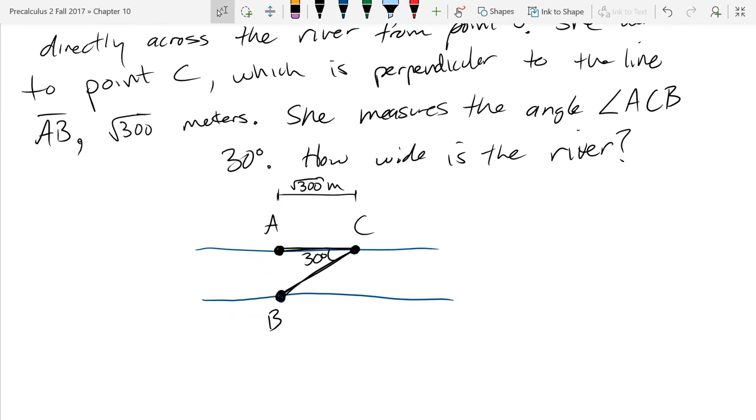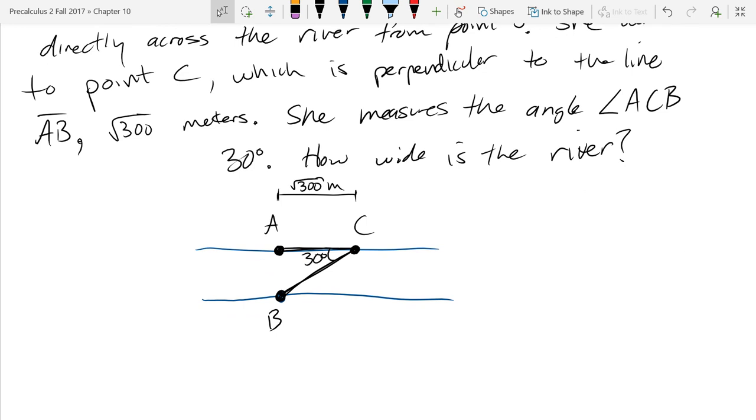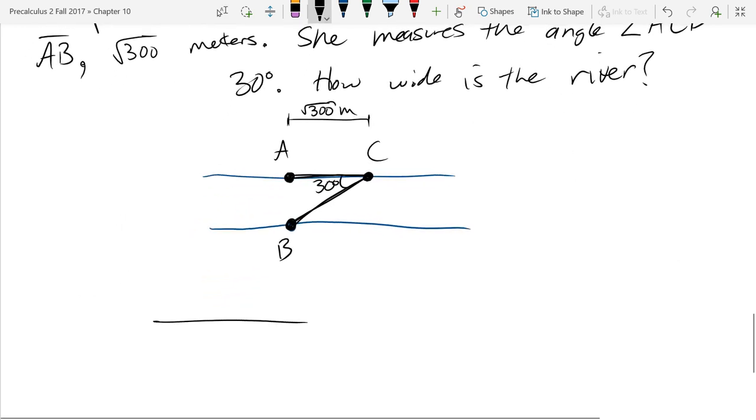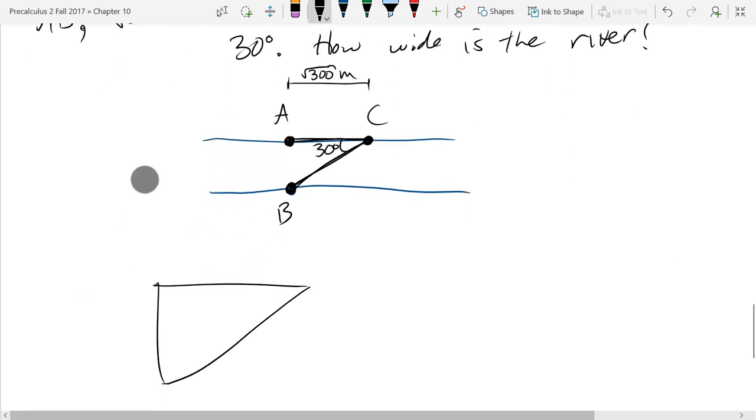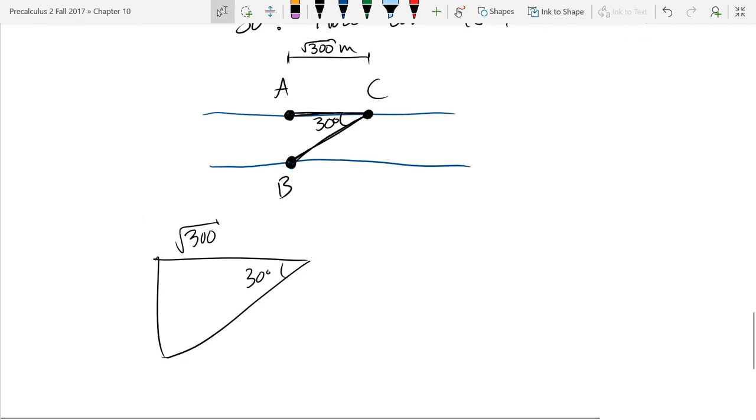How wide is the river? We need to measure this triangle. We could redraw it right down here - 30 degrees, square root 300. If I called this x and h, which side am I actually looking for? We're looking for x. What trig function relates 30 degrees, square root 300, and x?